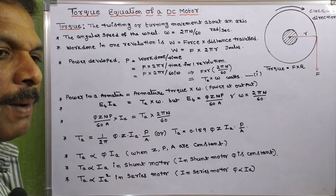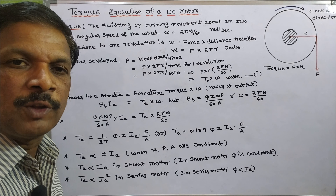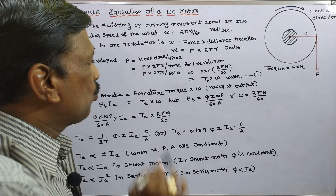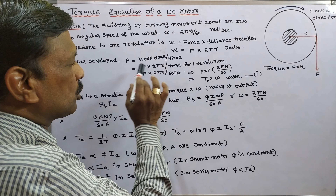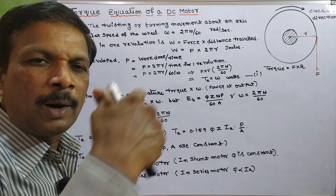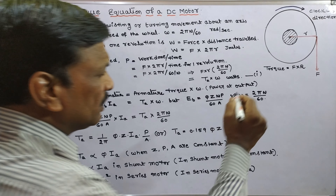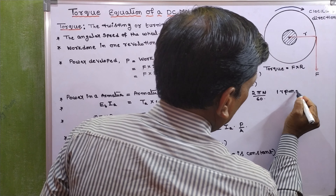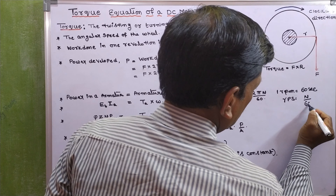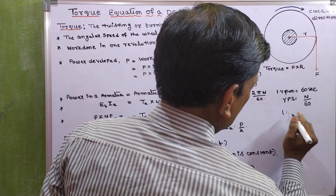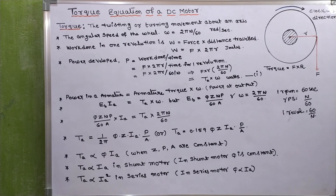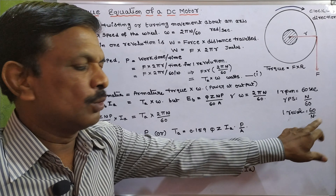Coming to power developed — power developed means the output power of the motor. Output power equals work done divided by time. Work done is F into 2πr, divided by the time for one revolution. The time taken to complete one revolution: at N rpm, in RPS that is N/60, so time for one revolution is 60/N seconds.